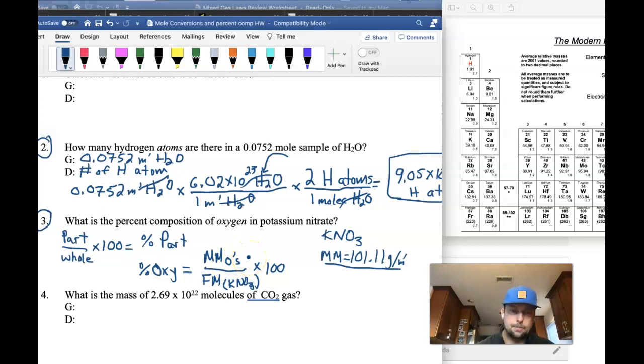So when we plug this in, our percent oxygen is going to equal three times the mass of oxygen from our periodic table over the formula mass of this entire compound times 100. We end up getting 47.5% oxygen.